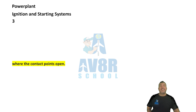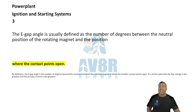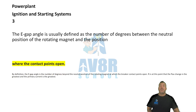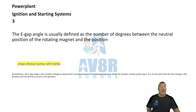Question number three: Where are the contact points open? The E-gap angle is usually defined as the number of degrees between the neutral position of the rotating magnet and the position where the contact points open.